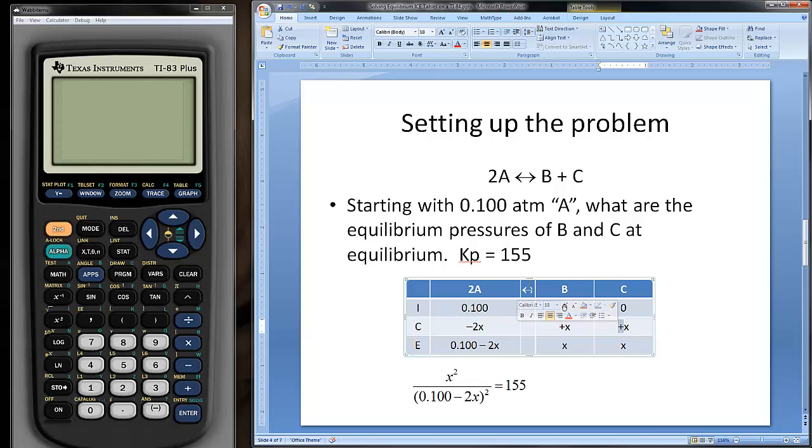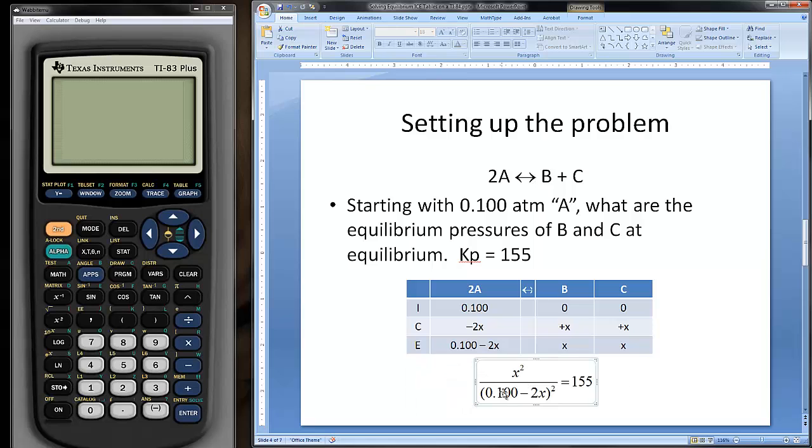The direction where it shifts towards always has positive signs. So everything on one side of the equilibrium arrow has to be positive, whereas on the other side, the signs have to be the opposite. In this case, A changes by -2X, B changes by +X, and C changes by +X. If you add the initial and the change, you get the equilibrium expressions. We plug that into the equilibrium constant expression.